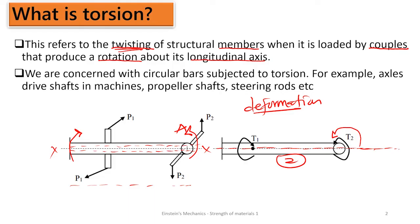We can consider certain things that we twist. We can look at propeller shafts, the steering rod, and also drive shafts in machines. They are all twisted. This is just an understanding of what torsion is about — anything twisted.